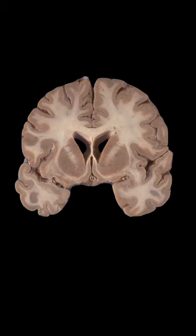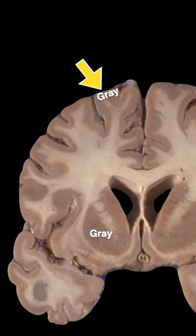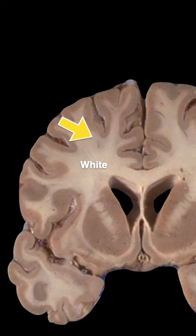Let's look at a brain section here, a coronal section. That looks gray, and that looks gray — so that tissue is primarily made up of cell bodies. Here we have tissue that's white, which is primarily made of axonal fibers that are myelinated.